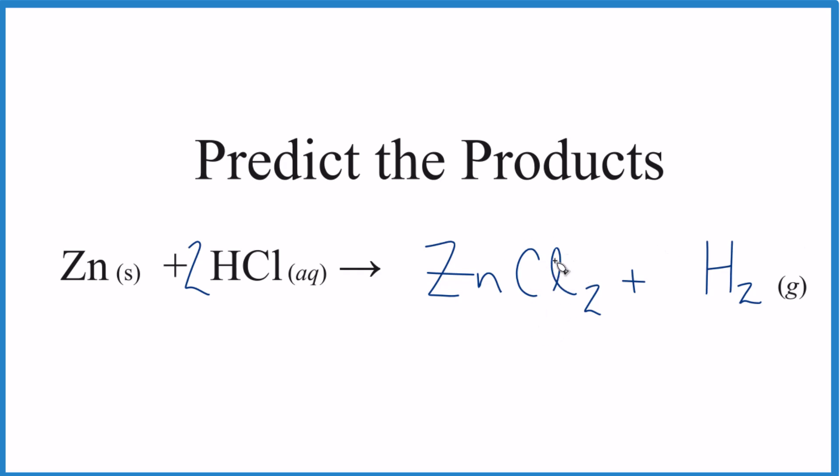Note also that chlorides, compounds with the chloride ion, they're pretty soluble, usually soluble. So zinc chloride, we'll put a little AQ after that to show it's soluble.